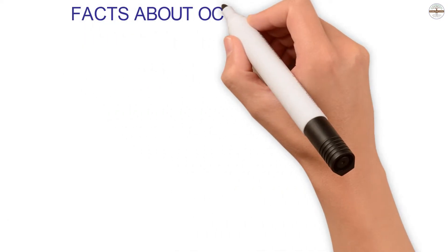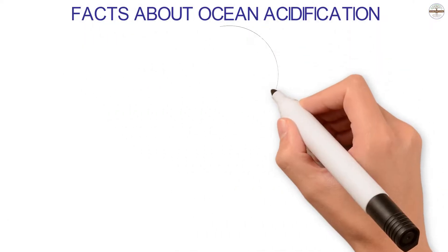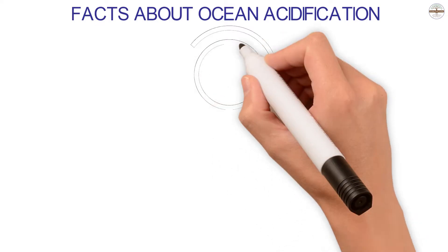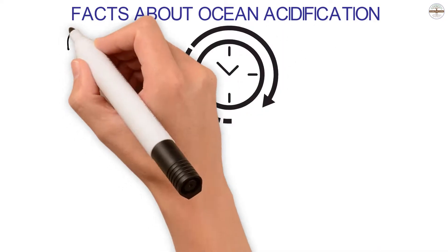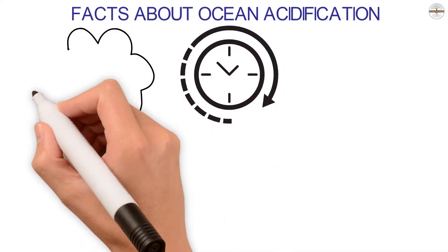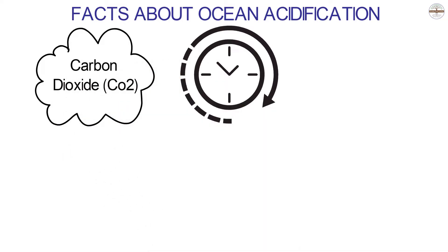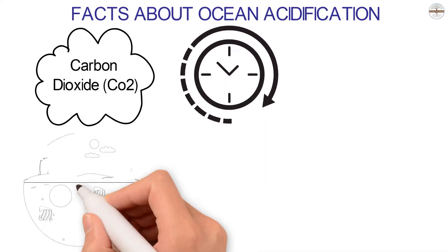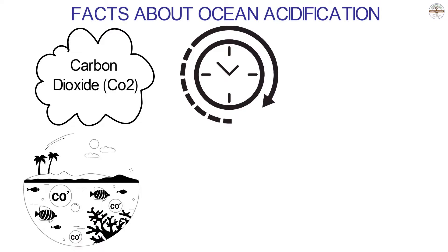Ocean acidification is a slow process that happens over a long time. It can take years for the ocean to become acidic. Carbon dioxide has been building up in the atmosphere for a long time, which has made the oceans more acidic.